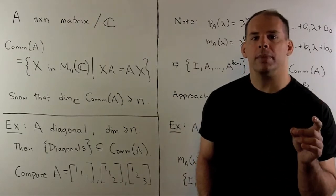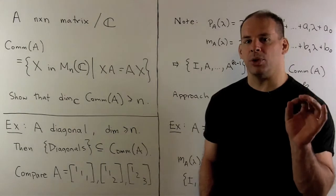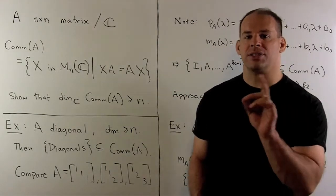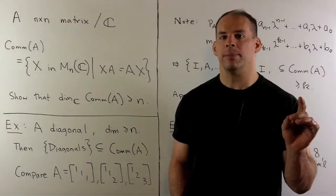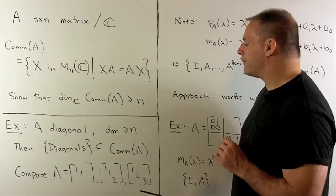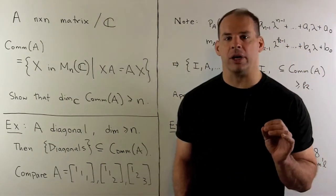To start, let's consider A diagonal. Then A commutes with every diagonal matrix. The set of diagonal matrices is a subspace of dimension n. So we'll have that the commutant of A has dimension greater than or equal to n.